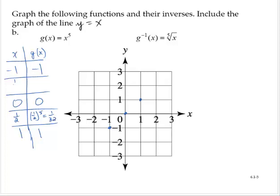And similarly, if x was negative 1/2, g of x would be negative 1/32. And so we have some points, 1/2, 1/32, that's very close to the x axis, about here. And similarly, on the other side. And so for g of x is equal to x to the fifth, we get a curve that looks roughly like this.